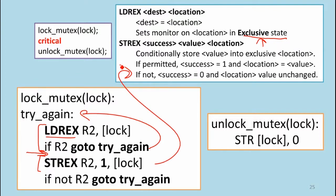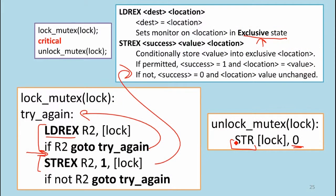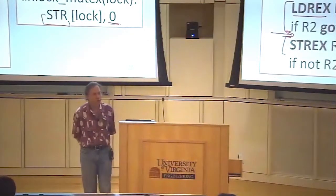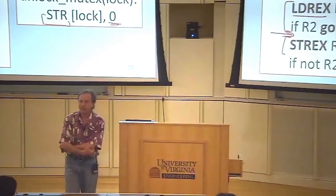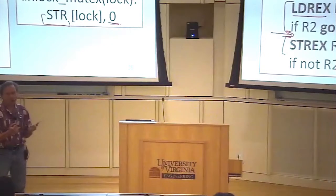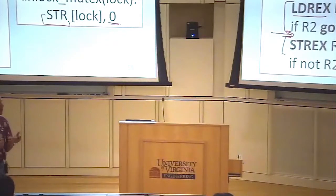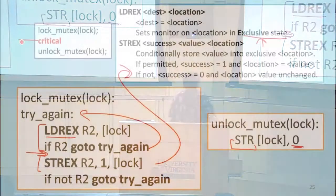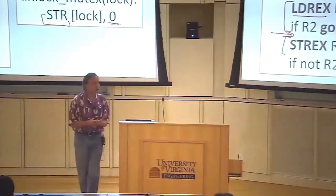The unlock just sets the value back to 0. We don't need to use an exclusive store for unlock. If another thread could be accessing what the lock protects at that moment, we're already in trouble — because the whole point of the lock is that once we enter the critical section, we have the exclusive property. Since no other thread could have the lock at that point, a regular store to set it back to 0 is safe.